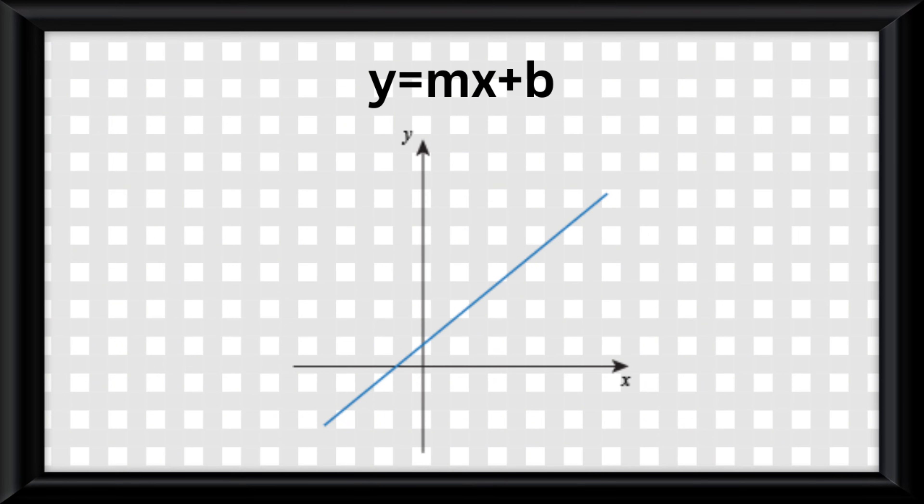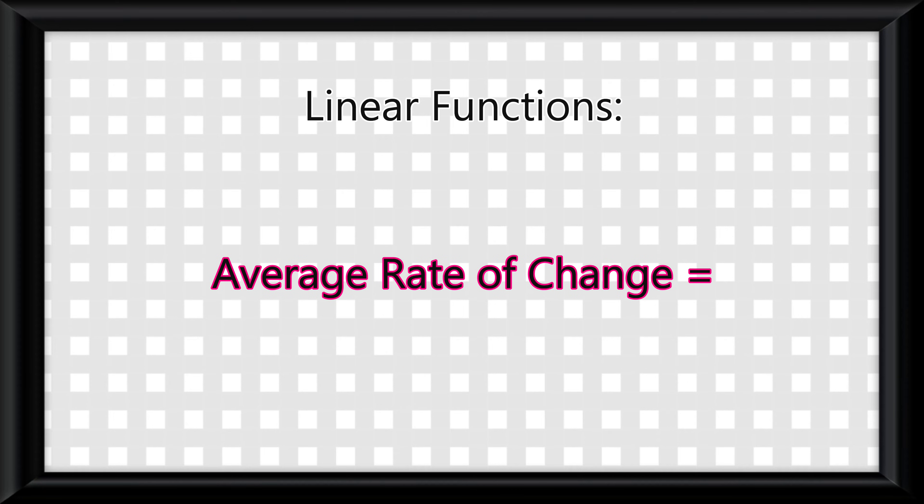We've been twiddling with this idea of average rate of change over specific intervals. In a linear function, the rate of change will always be the same no matter what interval you assign to it. This means the average rate of change is changing at a rate of zero. On the other side,